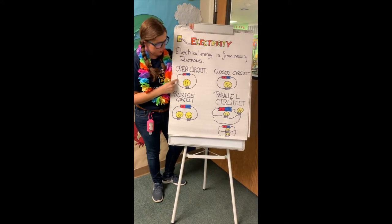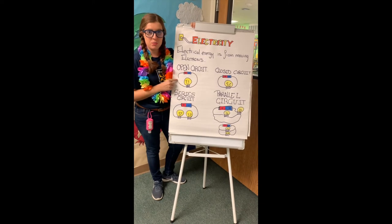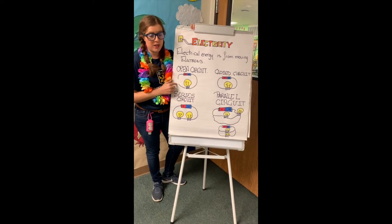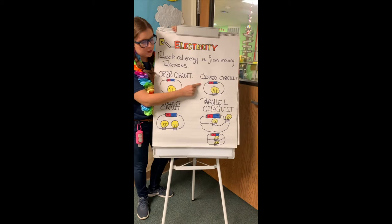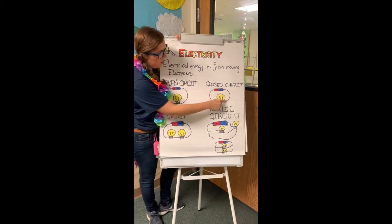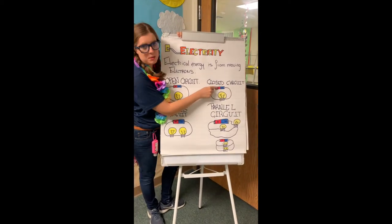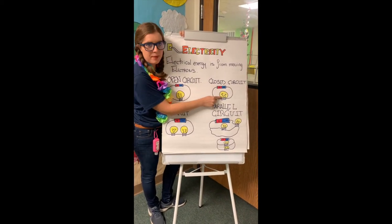The open circuit is when the connection could go around but cannot be completed because electricity is not flowing. Then you have the closed circuit. The closed circuit flows around all the elements of the circuit — you have the battery and the bulb.